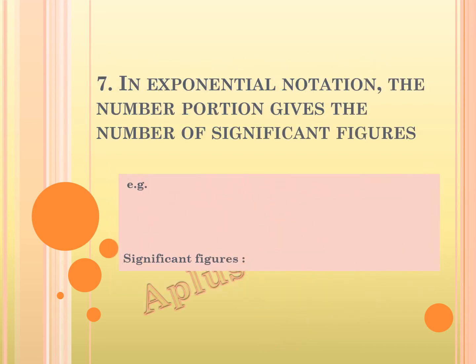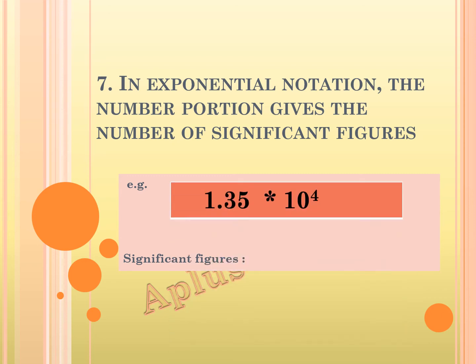Rule 7: in exponential notation, the number portion gives the number of significant figures. Let's take an example: 1.35 multiplied by 10 raised to 4. Here, the significant figure is 3. We don't have to see the exponential part; only the number part is to be seen. So here we have 3 digits and the significant figure is 3.